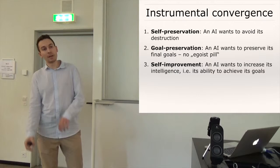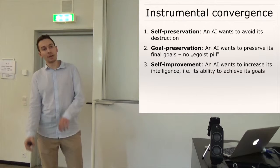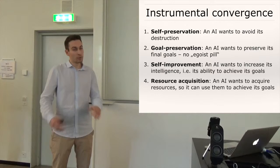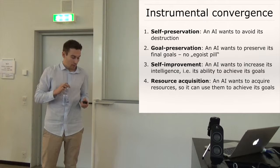and then there's also the third instrumental goal of self-improvement. An AI would just want to improve its own intelligence because that just means it has then a greater ability to achieve its goals and it would also try to acquire as many resources as possible just because resources are always useful for achieving your final or instrumental goals.